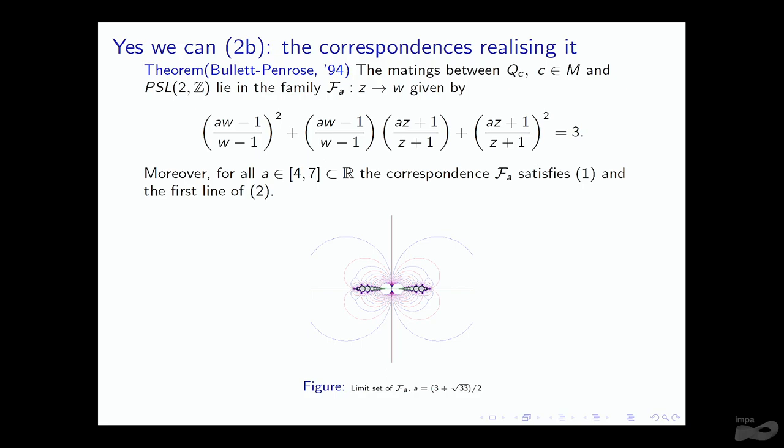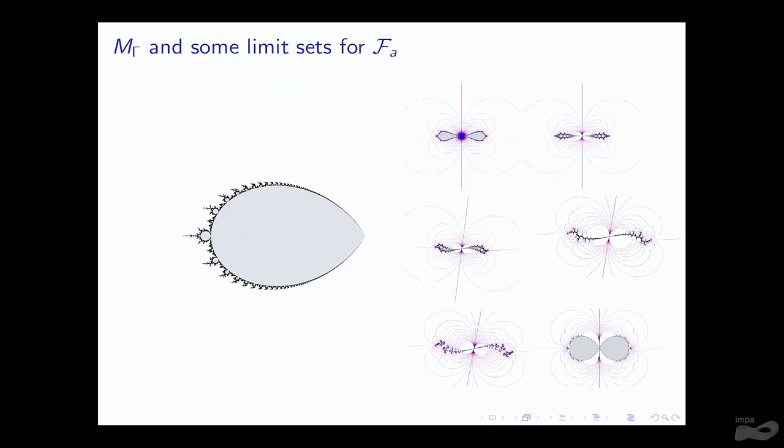This is the limit set for one of these correspondences, for a = (3 + √33)/2. Moreover, they proved that for all a in a certain real interval — from 7 down to approximately 4.4 — the dynamics gives a partition of the sphere into a completely invariant open set, where the dynamics is conjugated to the generators of the modular group, and a complement consisting of two sets connected by a point. Here are several limit sets for this family, and this is the connectedness locus.